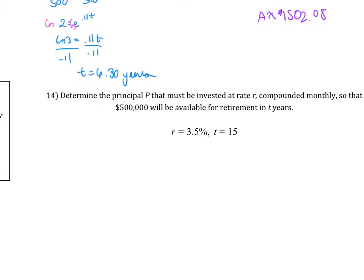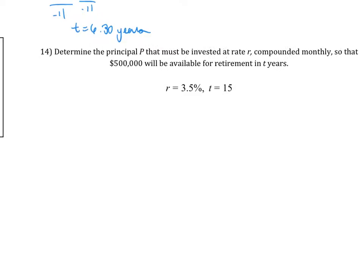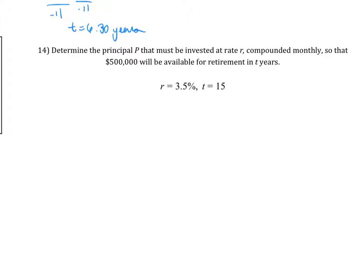Now for the last example, you want to determine the principal that must be invested at rate r. And it's compounded monthly, so that $500,000 will be available for retirement in t years. So compounded monthly, that is our n equals 12. And so we want A equal to be 500,000. We have our rate 0.035, and then time is 15. So if you plug it in, we're going to plug it into this formula.